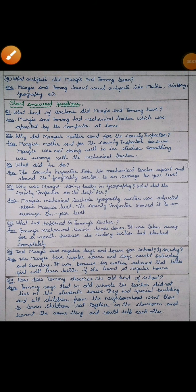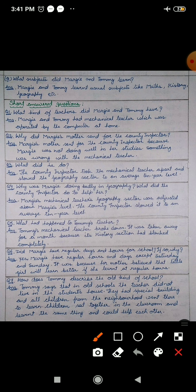Question number 7, how does Tommy describe the old kind of school? Tommy says that in old schools the teachers did not live in the student's house. Tommy ne bataya ki purane type ke jo school sote the usme teachers bachchon ke ghar mein nahi rahte the jaise mechanical teachers rahte the. They had special building, unke paas ek special building hoti thi jisko school kehte the. And all children from the neighborhood went there to learn, aur paas pados saare bachche wahan par jaate the padhne ke liye. Children sat together in the classroom and learn the same thing and could help each other.